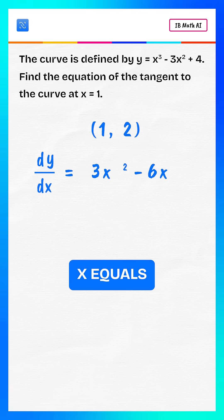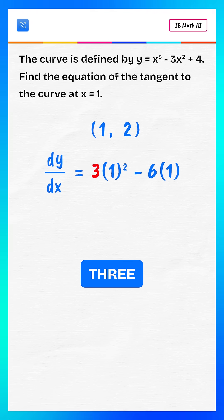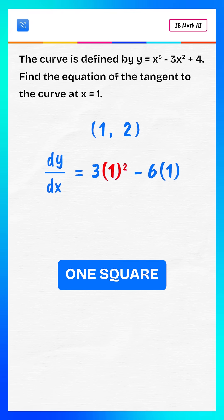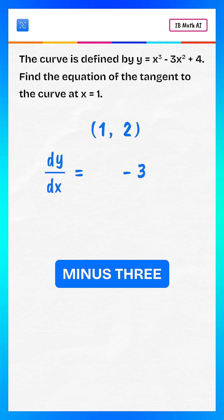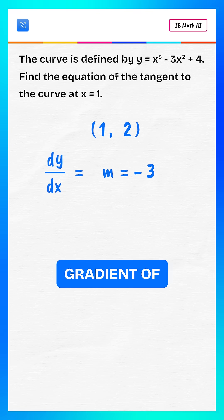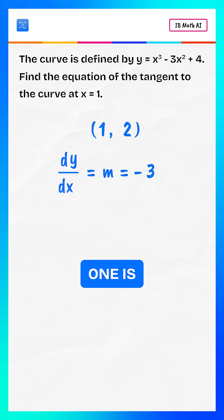Substitute x equals 1 into the derivative. This gives 3 multiplied by 1 squared minus 6 multiplied by 1, which equals minus 3. Therefore, the gradient of the tangent at x equals 1 is minus 3.